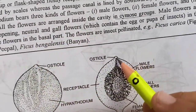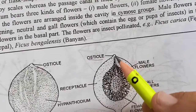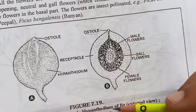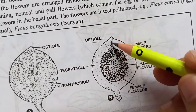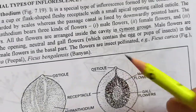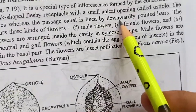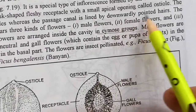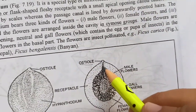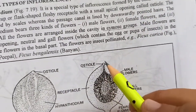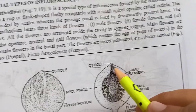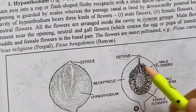Osteol ke baad ek passage canal aata hai. If we cut it in longitudinal section, this passage canal is lined by downwardly pointed hairs. Toh andar ki aur pointed hairs hoti hain is passage canal mein, osteol ke through.